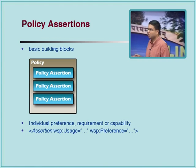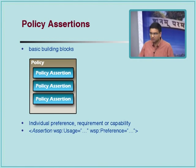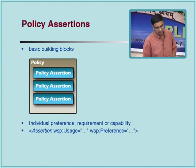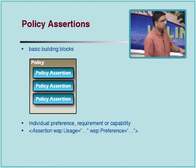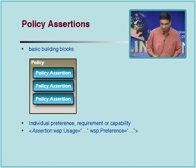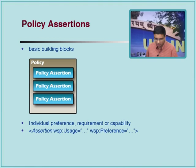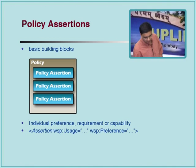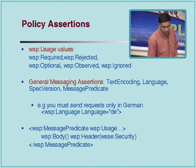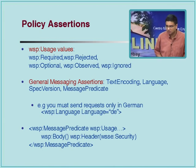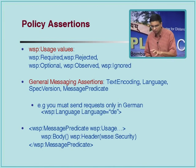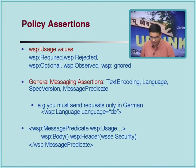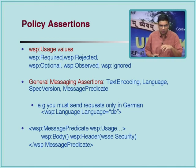The basic building blocks are what are called assertions within policies — like programming language assertions which say that something has to be true at some point in time. The assertions can either be a preference, a requirement, or from the service provider's perspective, a capability that they are providing. There is the notion of usage that we will describe within a policy specification.